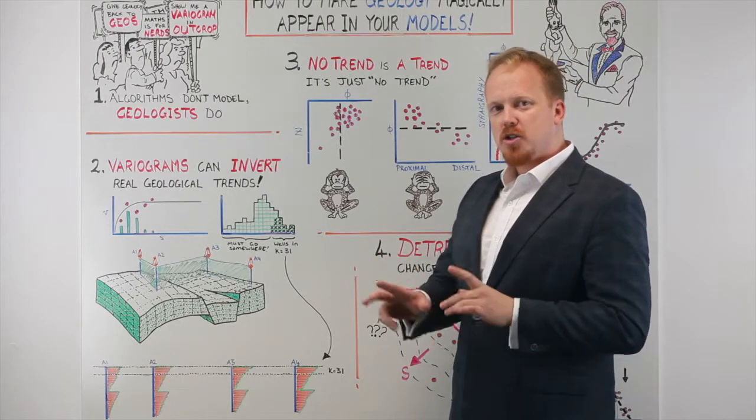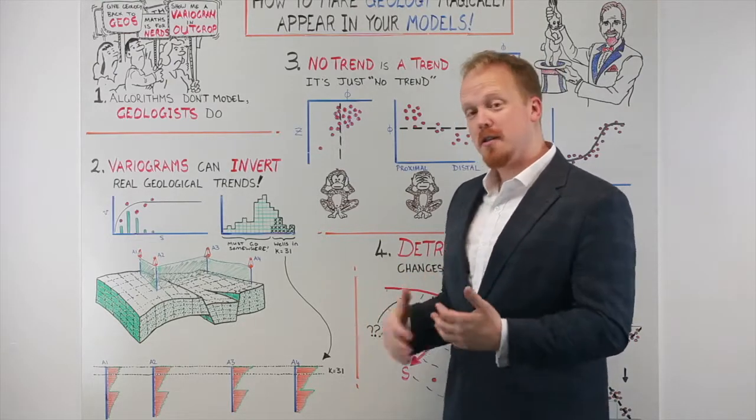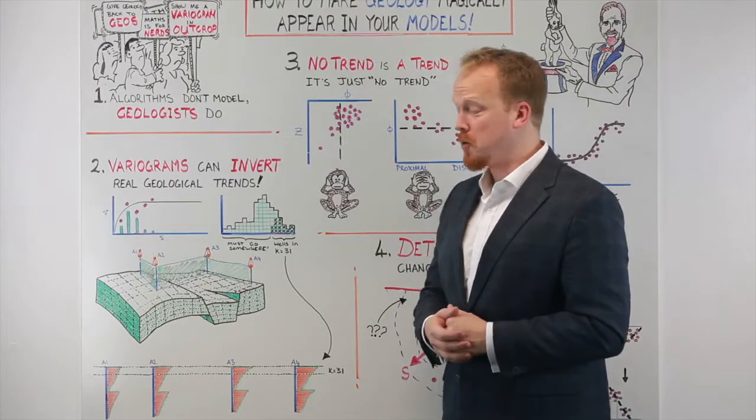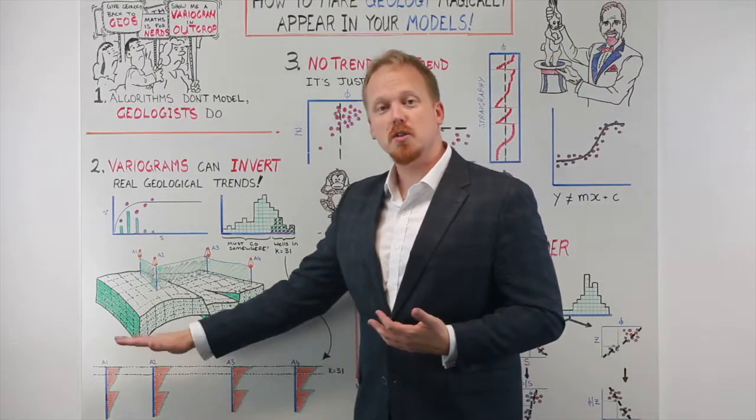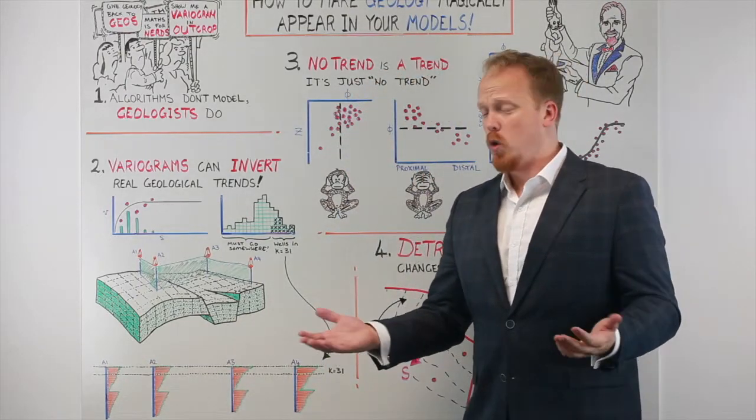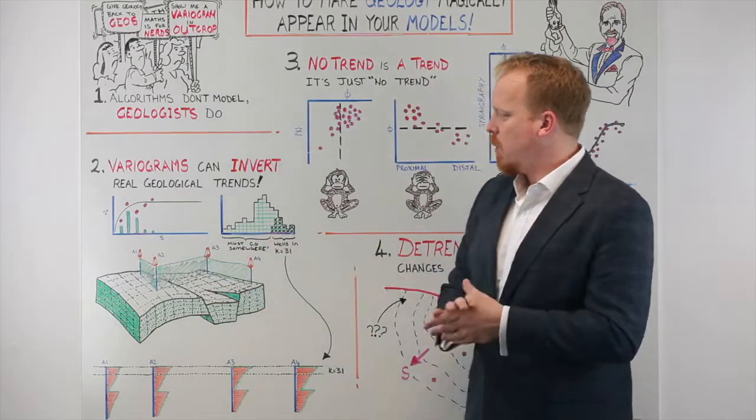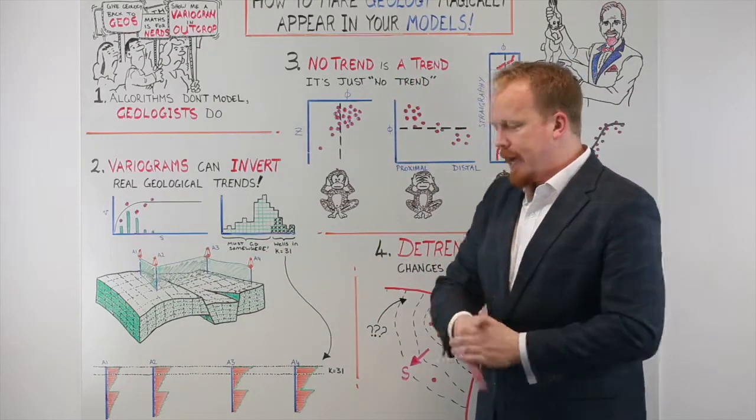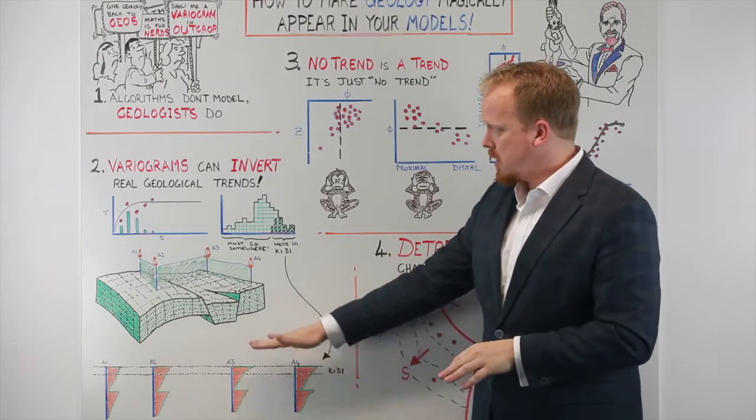I'll start this off by just showing you one of the challenges that can arise if you use variograms to try to deliver your geological trends into the model. What we'll use for an example are two coarsening upward sequences where we have two parasequences of a shoreface system observed by these four wells, A1 to A4, and let's see what would happen if we tried to distribute those purely with a variogram.